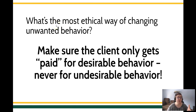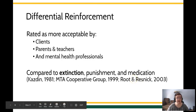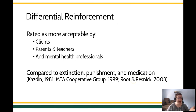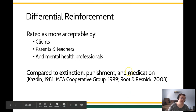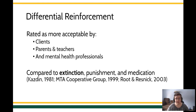The name of the game here really is about reducing harm. How do we change the behavior in a way that's socially valid and socially acceptable? Differential reinforcement research shows it has been rated by clients, by parents, teachers, caregivers, and by mental health professionals as more socially acceptable and more socially valid than other behavior deceleration techniques — and I mean extinction, punishment, and even medication used to decrease problem behavior. Differential reinforcement is an incredibly powerful and the most ethical procedure for decreasing undesirable behavior. I strongly encourage you: if you ever need to decrease a problem behavior, don't just try to use extinction or punishment. Don't just teach the client what not to do — teach the client what to do instead. Use differential reinforcement.